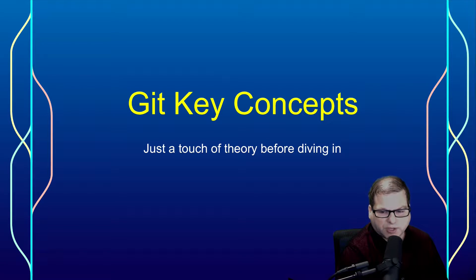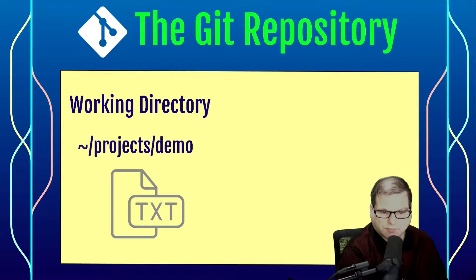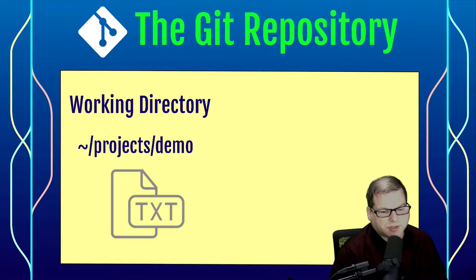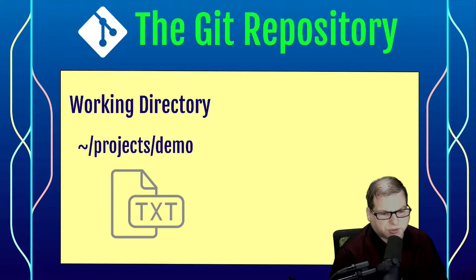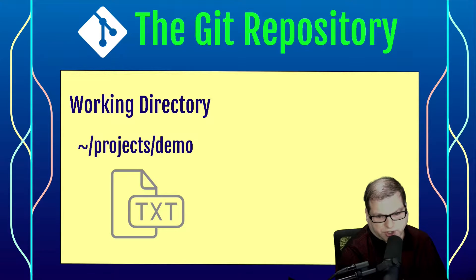Let's take a quick look at some key concepts regarding Git before we dive into the examples. Let's start with the Git repository. This is basically the collection of files and folders that's being managed by your source control tool. The Git repository is really two concepts in one. We start out with the working directory, which is your project folder that is being managed by Git, and that would be someplace on your hard drive.